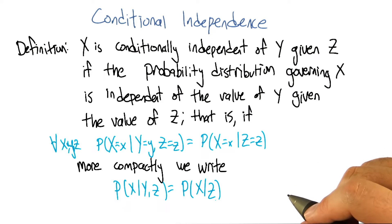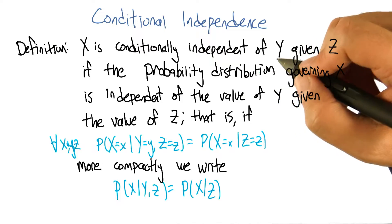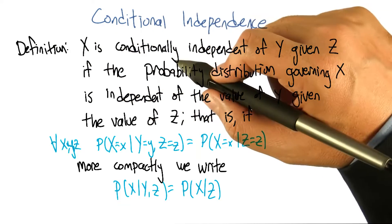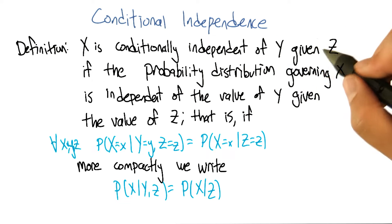All right, I'm going to hit you with a definition first. Hit me. So conditional independence is this idea that goes like this. We're going to say that some variable that makes up the joint distribution is conditionally independent of some other variable, Y, given Z.